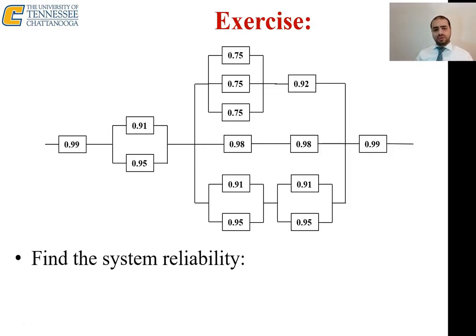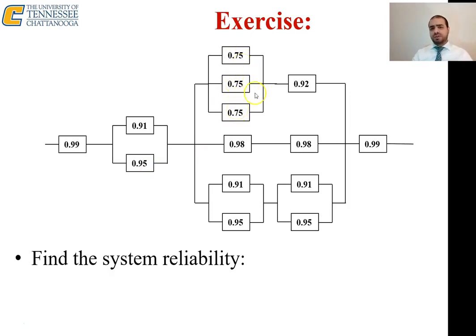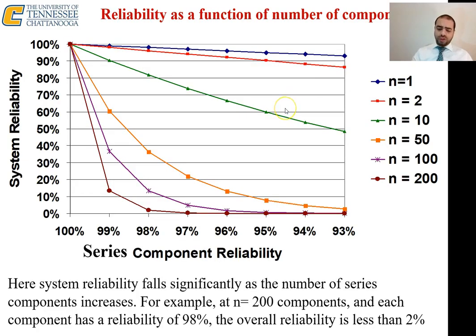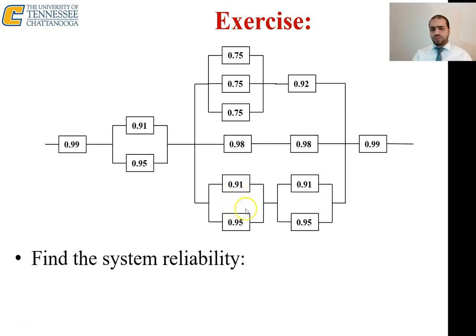Now for the class exercise: 0.99 is in series with two parallel components (0.91 and 0.95) — find their parallel equivalent. Then three components in parallel have their own equivalent, placed in series with 0.92. There are also two components in series followed by two in parallel. Find each equivalent, then combine everything in series by multiplying all values together.